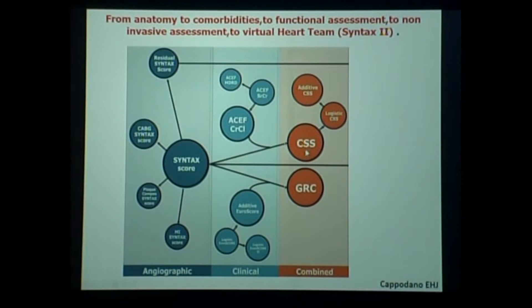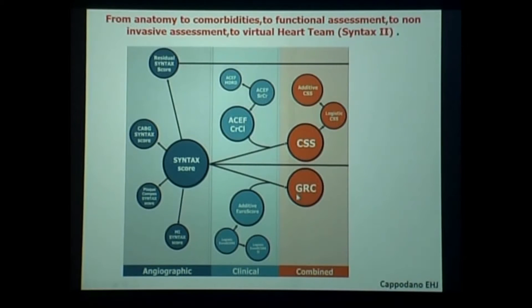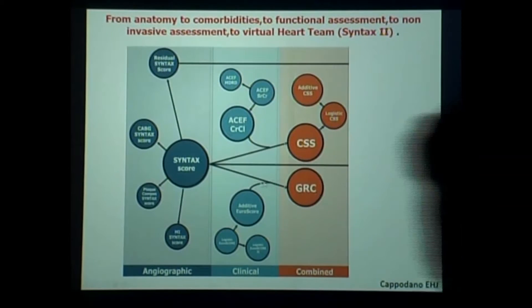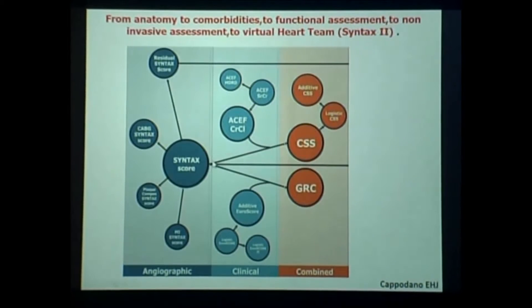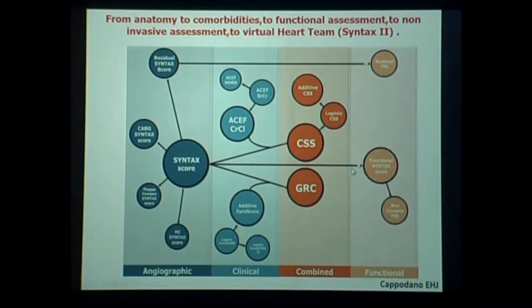So two things were developed: one, the clinical Syntax score — I transformed that into the logistic clinical Syntax score and additive clinical Syntax score — and Davide Capodano at Catania developed the global risk classification. And then you see a line going from Syntax score to what became the functional Syntax score, through the action of Bernard de Bruyne, Bill Ferron, and others.